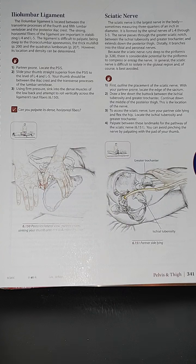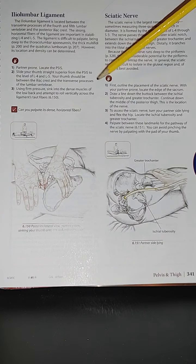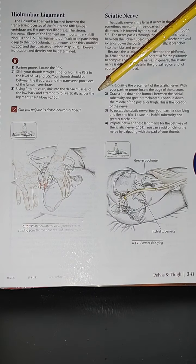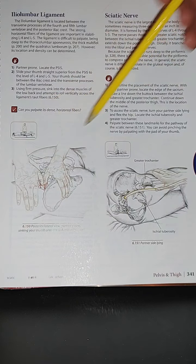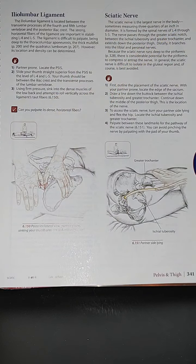Slide your thumb straight superior from the PSIS to the level of L4 and L5. Your thumb should be between the iliac crest and the transverse processes of the lumbar vertebrae. Using firm pressure, sink into the dense muscles of the low back and attempt to roll vertically across the ligament's horizontal fibers. Can you palpate its dense horizontal fibers?